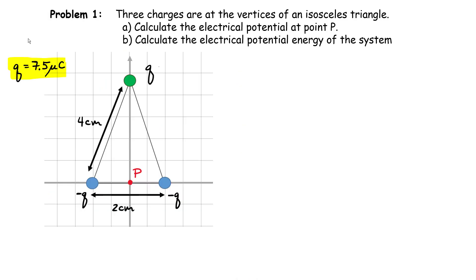In our first problem, we have three charges at the vertices of a triangle. The first question asks us to calculate the electrical potential at point P. The second question is: what is the potential energy of the system? These are two different quantities to calculate. To find the total potential V at point P, you need to know the magnitude of each charge and the distance to the point where you're evaluating it.